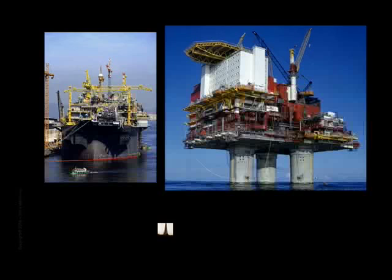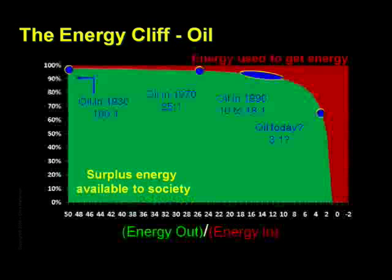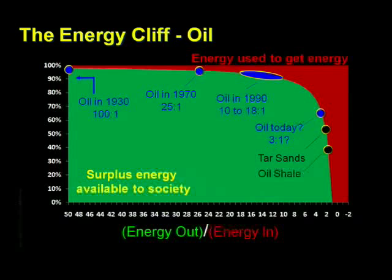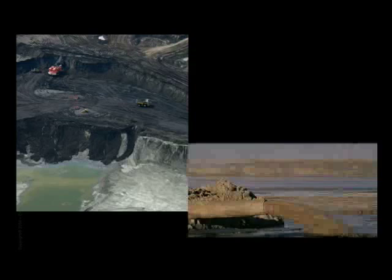And what about the allegedly massive amounts of oil contained within the so-called tar sands and oil shales — the ones often described as equivalent to several Saudi Arabias? The net energy values for these are especially poor and in no way comparable to the 100 to 1 returns found in Saudi Arabia. Further, the water and environmental costs associated with them are disturbingly high.